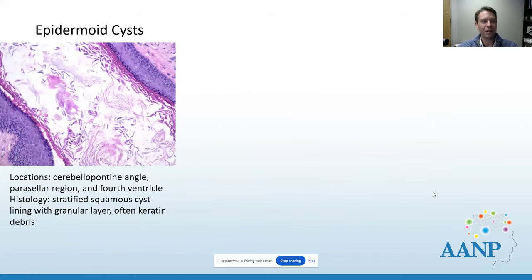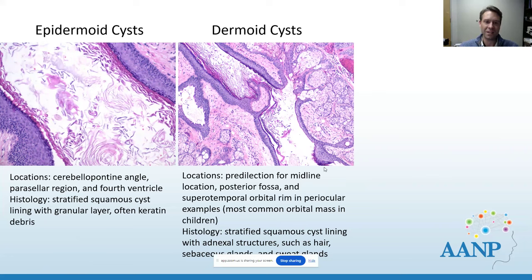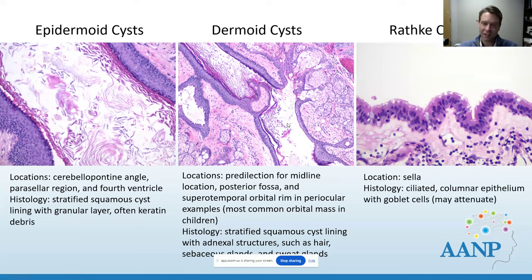Epidermoid cysts, which we may see at the CP angle or parasellar region, have bland stratified squamous epithelium, a nice granular layer, and plenty of keratin debris. Dermoid cysts tend to have a predilection for the midline; in the orbit they arise in the superotemporal orbital rim and are the most common orbital mass in children — in addition to squamous epithelium, they have adnexal structures and glands connected to the cyst wall. Rathke cleft cysts are located in the sella and we hope to see ciliated columnar epithelium with goblet cells, though this may be very attenuated in practice.